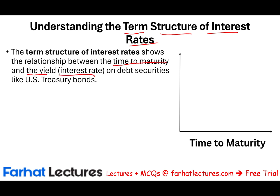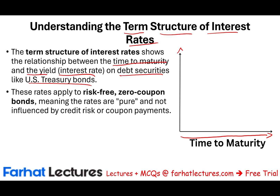On the x-axis we put time to maturity, and on the y-axis we put an interest rate. For example, we could use any interest rate, but specifically we will use debt securities like U.S. Treasury bonds. This rate could apply to a risk-free zero coupon bond, meaning that rates are pure and not influenced by credit or coupon payment.